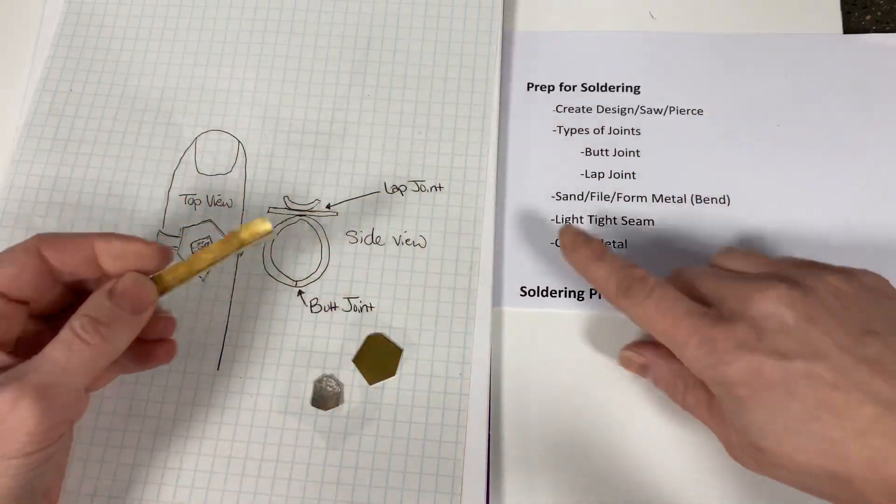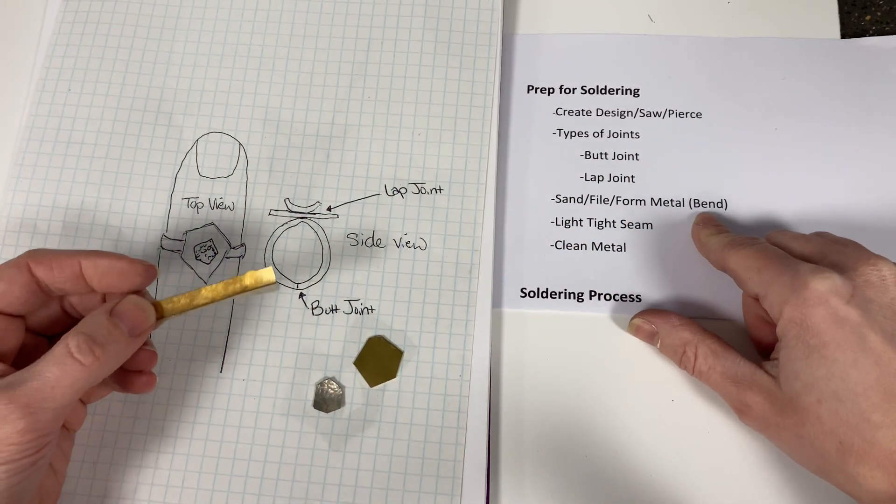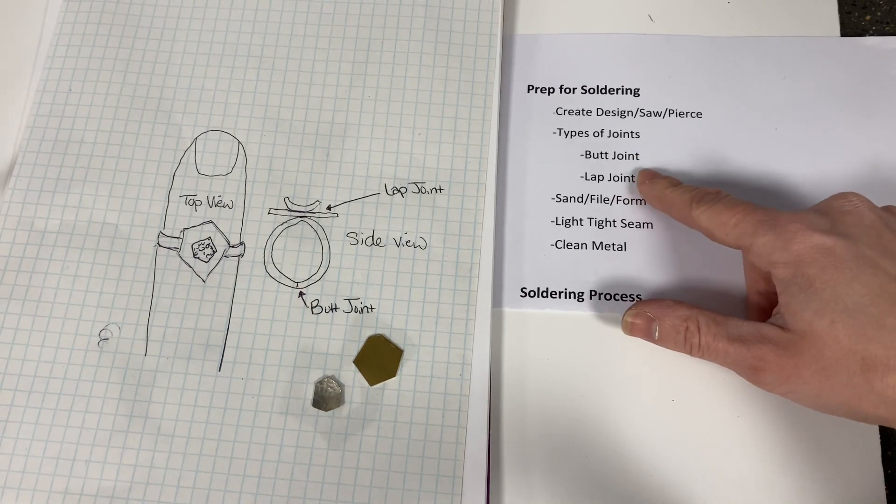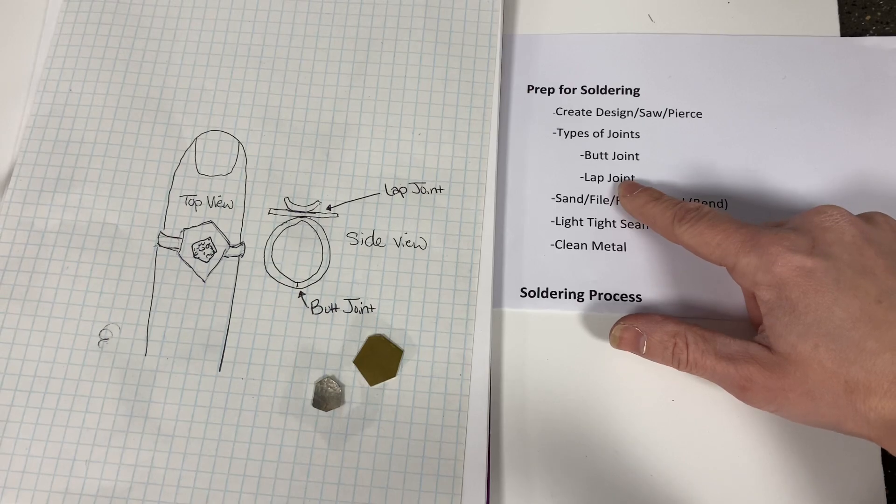So as mentioned, sanding, filing, and then you'd form your piece, which I'll talk about in just a sec. Let's talk about the two types of joints that we're going to go over in class, the butt joint and the lap joint.